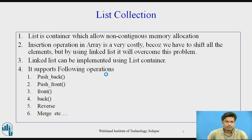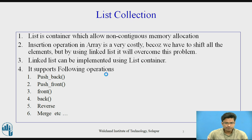LIST is a container which allows non-contiguous memory allocation. Insertion operation in an array is very costly because we have to shift all the elements. By using linked list, it overcomes this problem. For example, if we have an array of 10 with 5 elements and want to insert at the second position, we need to right-shift all elements after that position. That is very costly in an array, so that's why we use the LIST collection.